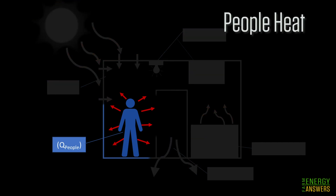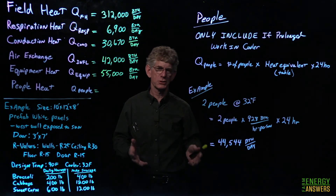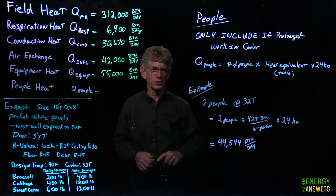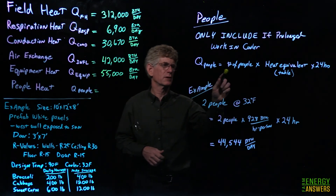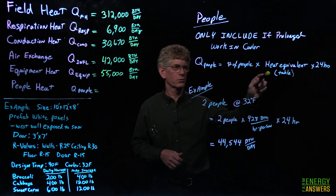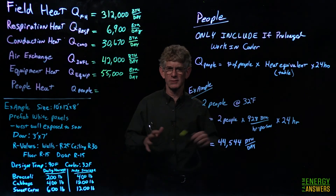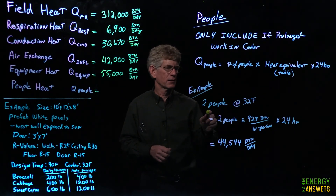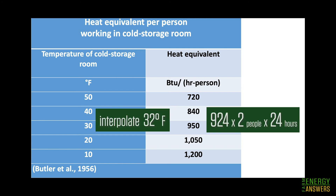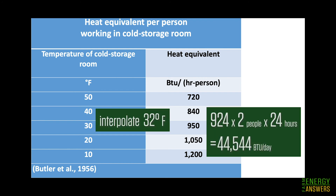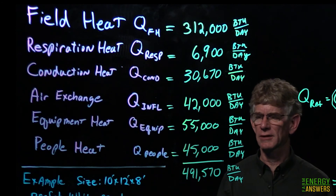People heat load is only included if people are working in the cooler for a prolonged period — sorting, packaging, not just briefly entering and leaving. The formula is: number of people × heat equivalent (from table) × hours. At 32°F, the table gives approximately 45,000 BTUs per day for two people working in the cooler.